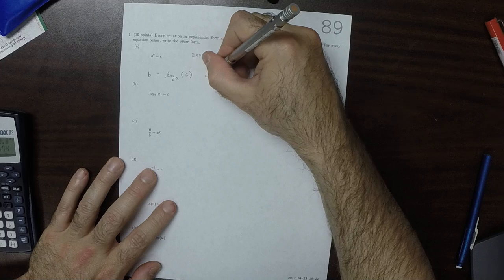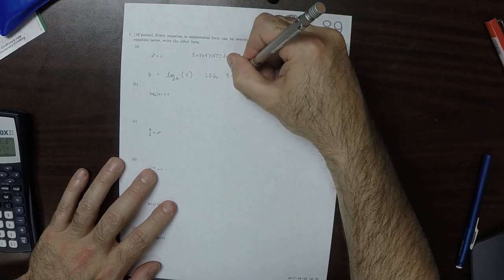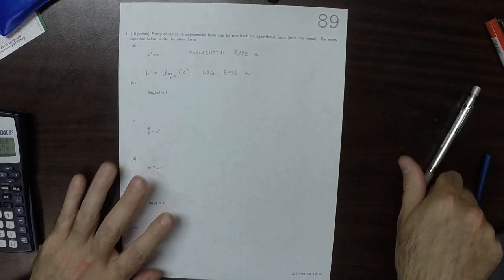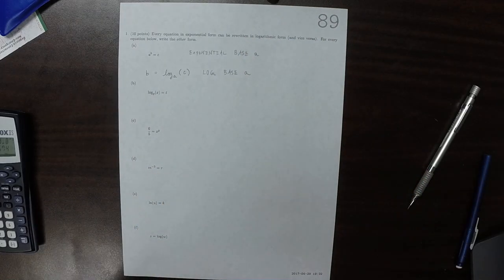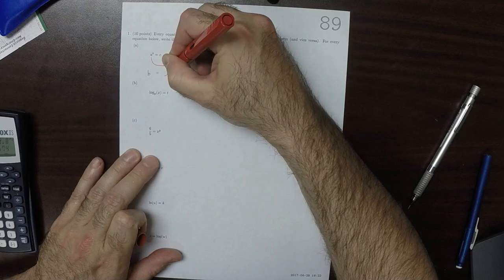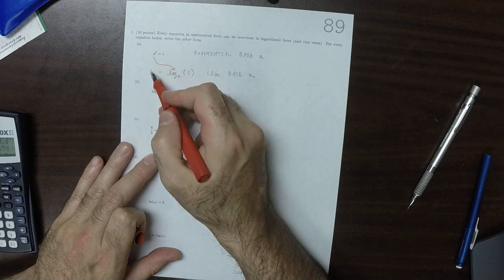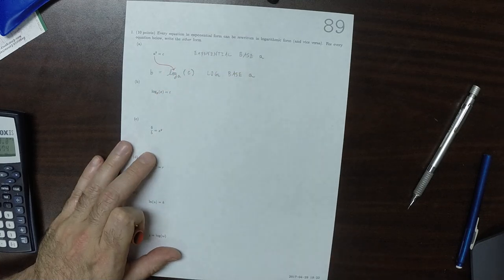So now this is in log base A, which is to say that the base changed sides. Notice that B is still on its side and C is still on its side.